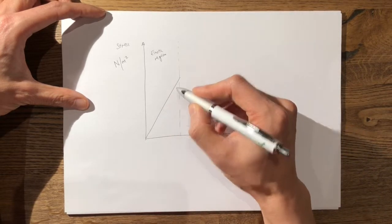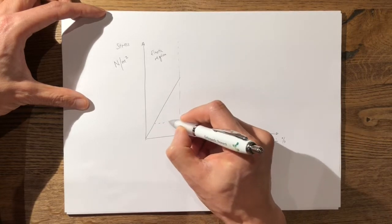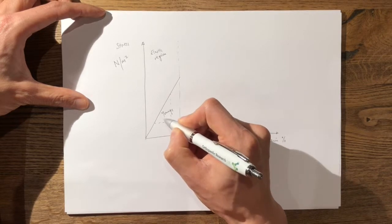This portion of the curve also follows Hooke's law of proportionality. The gradient is known as the Young's modulus of elasticity.